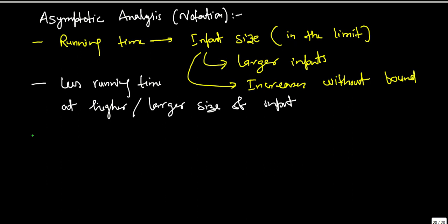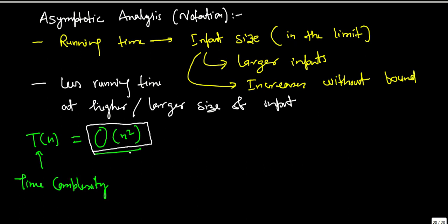Now, if we say running time of an algorithm is big O of n square, we can also say that time complexity of an algorithm is big O of n square. Then it means I am talking about the worst case running time of an algorithm. That means it is going to take at most n square time. So, big O notation describes the worst case.